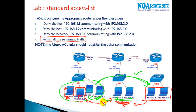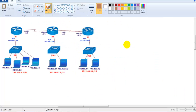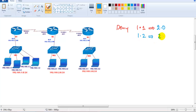Communication from the 2-network back to those sources is also not permitted. So to summarize the rules: deny 192.168.1.1 going to the 2-network, deny traffic from 1.2 going to the 2-network, deny the complete 192.168.3 network communicating with the 2-network, and permit all remaining traffic.